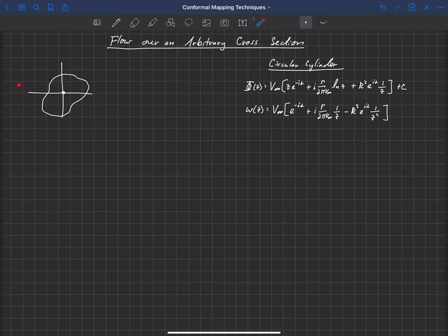So now we want to look at flow over an arbitrary cross-section. And we might notice, if you look at this expression here for the complex velocity for the flow over a circular cylinder, it's actually the first three terms in what is called a Laurent expansion.